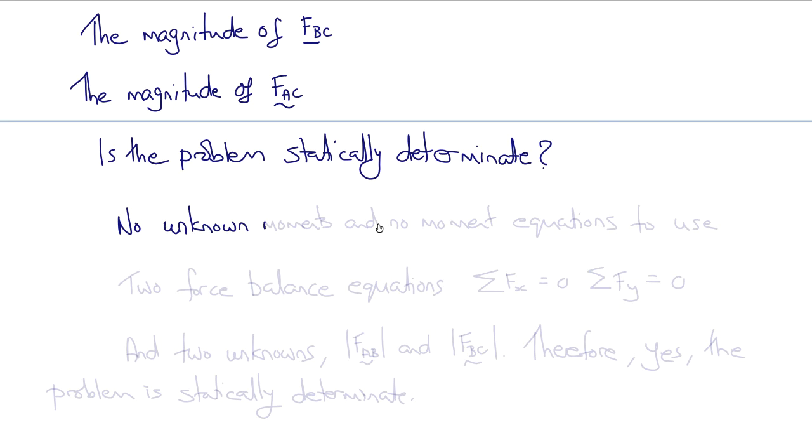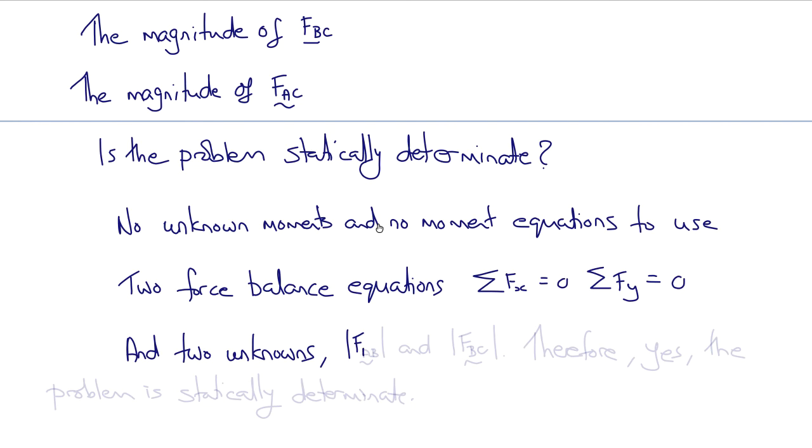Well, there are no unknown moments and no moment equations to use in this problem, because it's a pin-jointed structure, so none of the intersections can support a net moment. So that means we're left with two force balance equations, one saying the sum of the x forces is zero, and the other saying the sum of the y component of the forces is zero. And we have two unknowns.